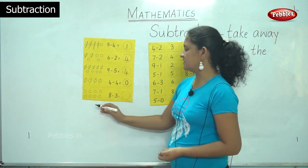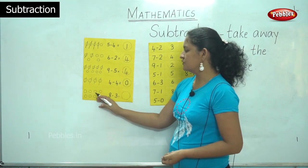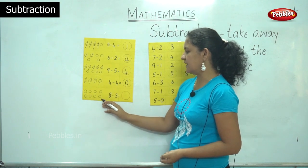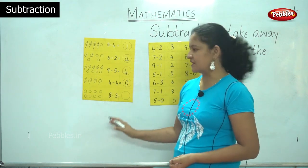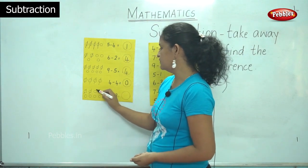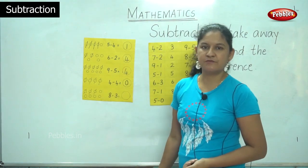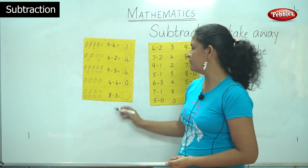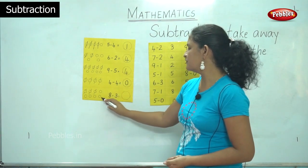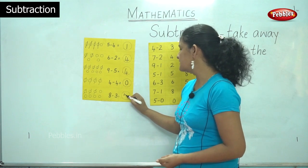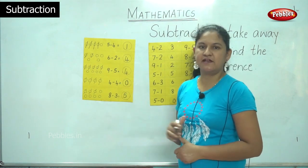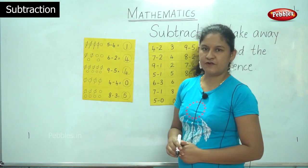The next: 1, 2, 3, 4, 5, 6, 7, 8. I have 8 balls and I have to take away 3. So 1, 2, 3. Let us count the remaining number of balls: 1, 2, 3, 4, 5. So my answer is 5. 8 minus 3, or 8 take away 3, gives me 5.